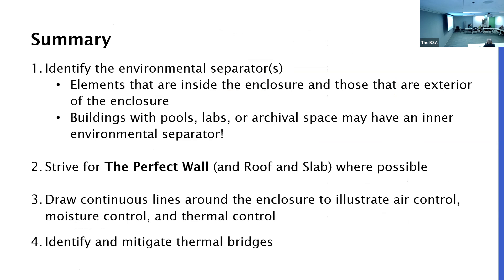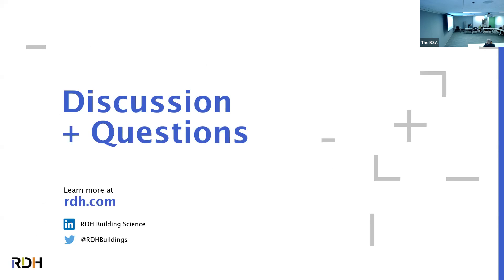In summary: we typically want to identify environmental separators — elements that are inside the enclosure versus outside the enclosure. We want to look at our buildings for any special use cases like pools, labs, archival spaces, gymnasiums, and hockey rinks, because those may have special environmental considerations requiring an interior separator. We want to strive for the perfect wall — it's the best way to start off with your wall assembly because no matter where you put it, whether in Florida, Massachusetts, or Iqaluit, Nunavut, it will work. Draw continuous lines to illustrate your air control, moisture control, and thermal control layers. And finally, identify and mitigate thermal bridges within your wall assembly.